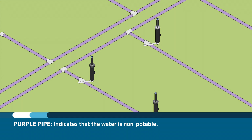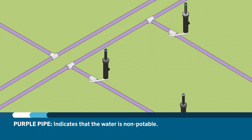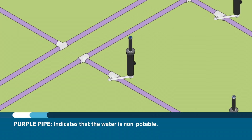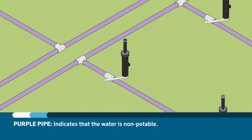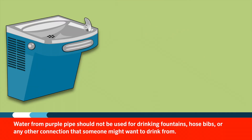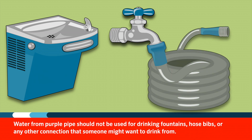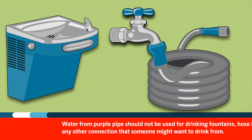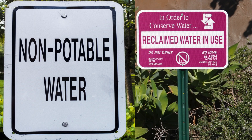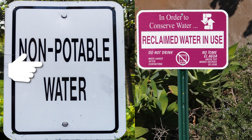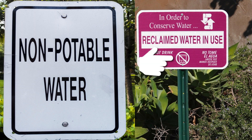If you are irrigating a project with non-potable water, it is recommended and sometimes mandated by local code to use purple pipe. Purple pipe indicates that the water traveling through it is non-potable and should not be used for drinking fountains, hose bibs, or any other connection that someone may possibly drink from. This type of pipe is normally labeled with one of the following: recycled water, reclaimed water, or non-potable water, and all will have a do not drink warning printed on them.